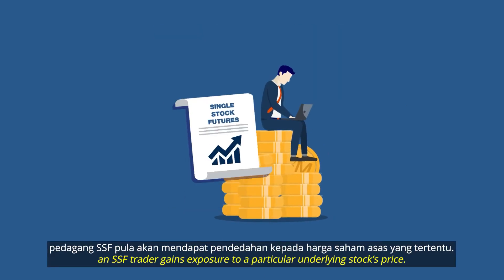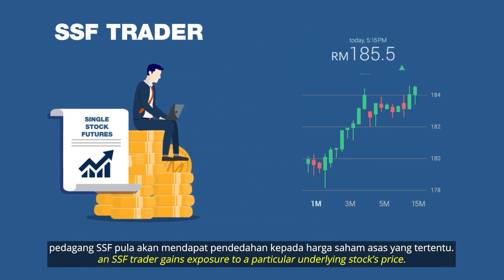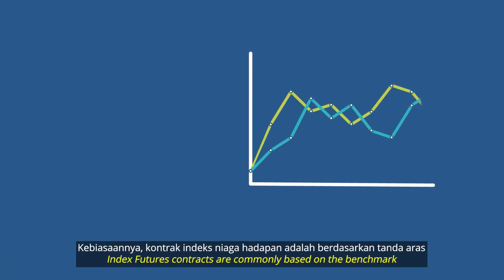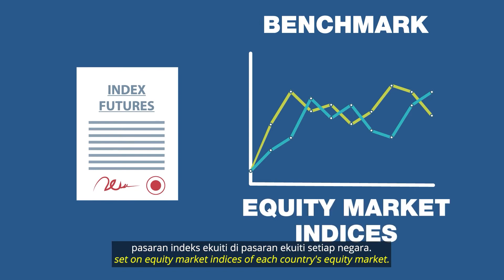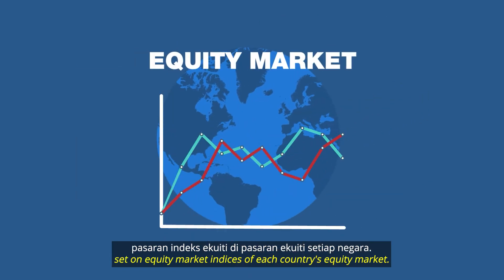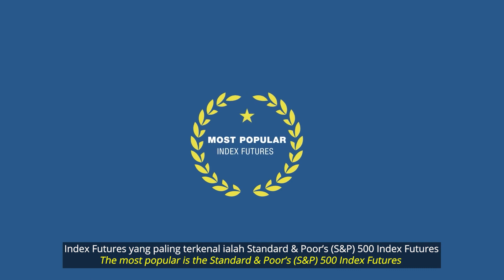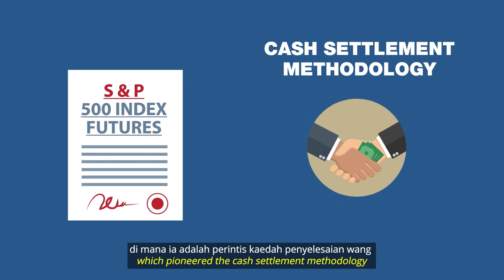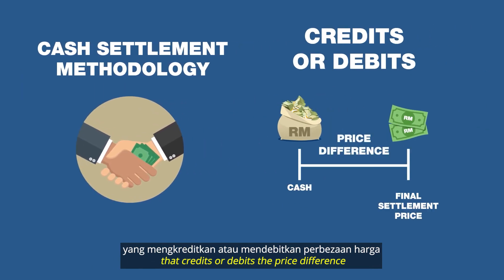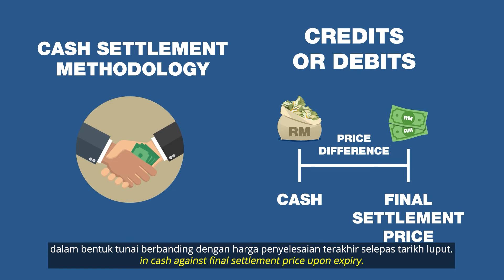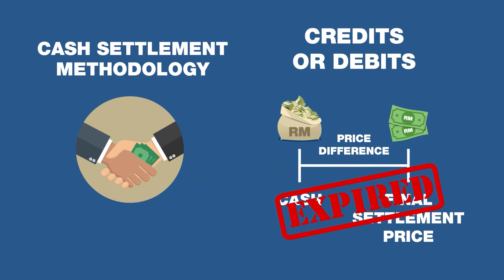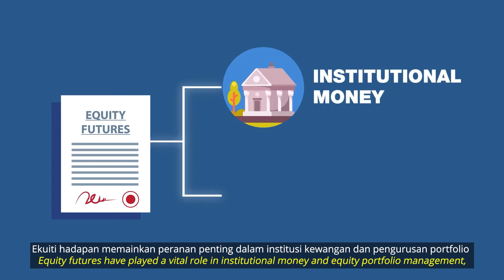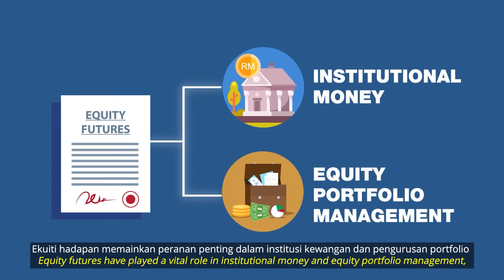While an equity index offers exposure to the price movements of an index, an SSF trader gains exposure to a particular underlying stock's price. Index futures contracts are commonly based on the benchmark set on equity market indices of each country's equity market. The most popular is the S&P 500 index futures, which pioneered the cash settlement methodology that credits or debits the price difference in cash against the final settlement price upon expiry.